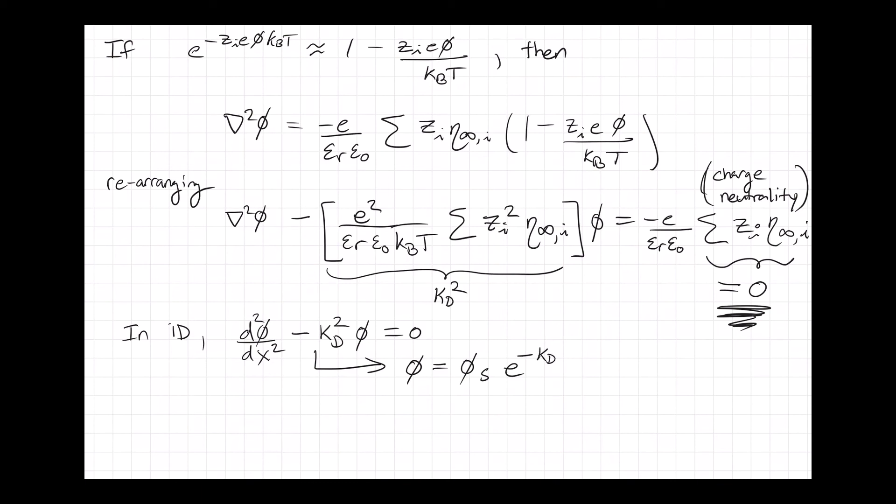I'll find a pretty simple solution here which is that φ equals some constant prefactor times e to the minus KD times x.